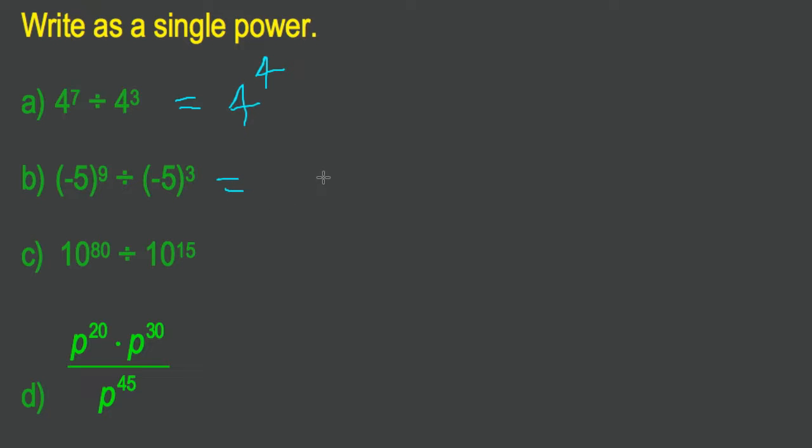In the second example, negative 5 to the 9 divided by negative 5 to the 3. Once again, the base is the same. I leave it alone. I keep it the same. 9 subtract 3 is 6. I just subtract those exponents.